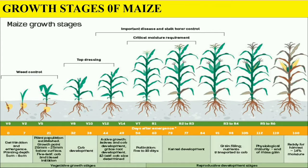In addition to being consumed directly by humans, often in the form of masa, maize is also used for corn ethanol, animal feed, and other maize products such as corn starch and corn syrup. The six major types of maize are dent corn, field corn, pod corn, popcorn, flour corn, and sweet corn.